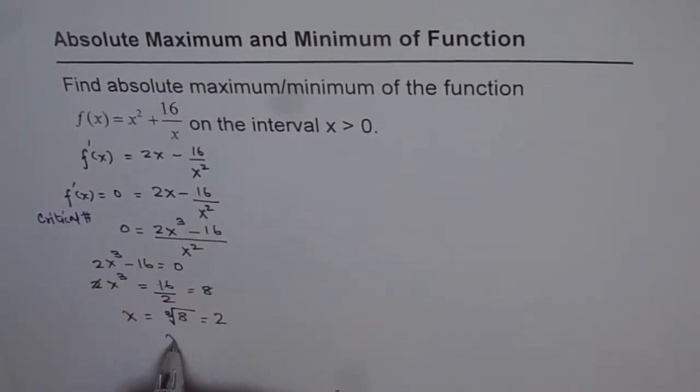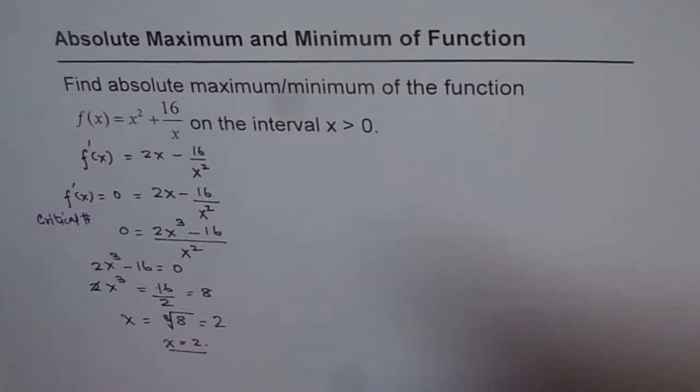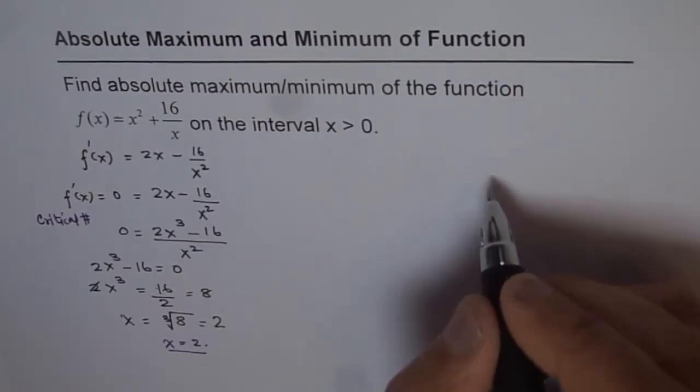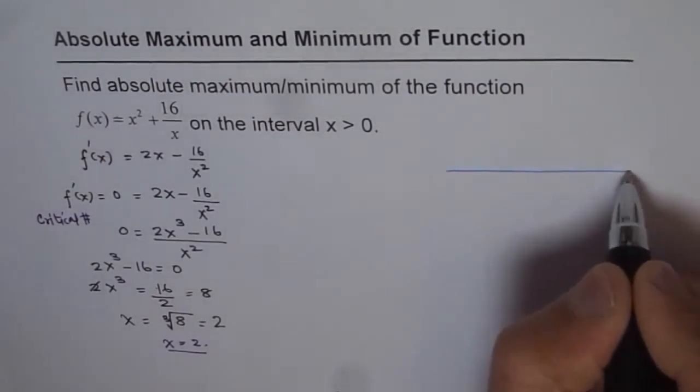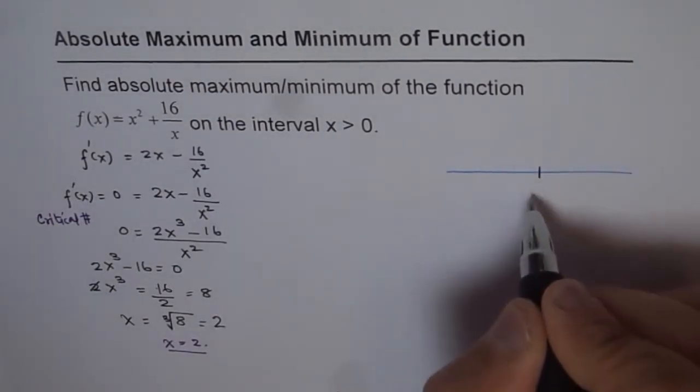So at x = 2 we have a possibility of maximum or minimum. Now let's see how to test whether it is indeed a maximum or minimum at x = 2. We'll take a number line and on that line we'll take a point which is x = 2.